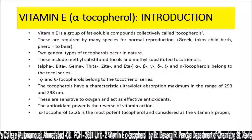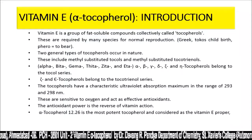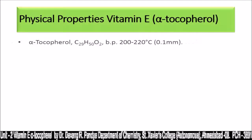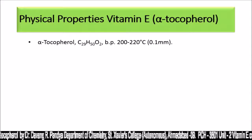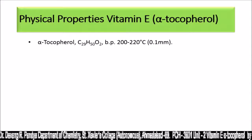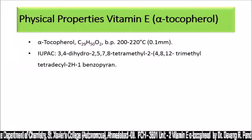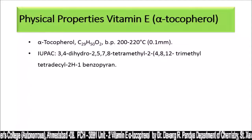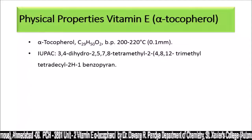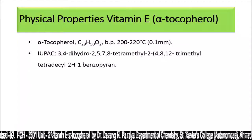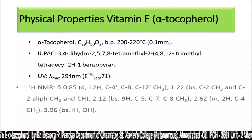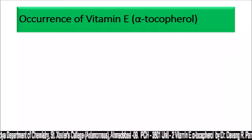Alpha tocopherol is the most potent tocopherol and is considered Vitamin E in the proper sense. The physical properties of alpha tocopherol: molecular formula C29H50O2, boiling point ranging between 200–220°C. Its IUPAC name is 3,4-dihydro-2-(4,8,12-trimethyltridecyl)-2,5,7,8-tetramethyl-2H-1-benzopyran — it has a benzopyran skeleton.